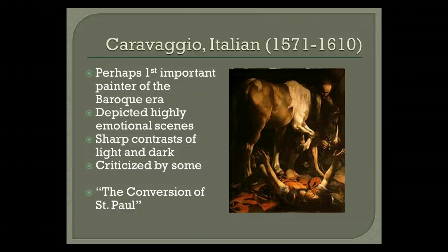Caravaggio, our Italian Baroque artist, is perhaps the first important painter of the Baroque era. He is known for depicting highly emotional scenes as well as the sharp contrast of light and dark, but was criticized by some for using ordinary people as models for his depictions of biblical scenes. Caravaggio is probably the most original painter of the 17th century and injected new life into Italian painting after the artificiality of mannerism following the High Renaissance. He took realism to new lengths, painting bodies in a thoroughly down-and-dirty style as opposed to pale mannerist phantoms, and in doing so, Caravaggio secularized religious art, making saints and miracles seem like ordinary people and everyday events.